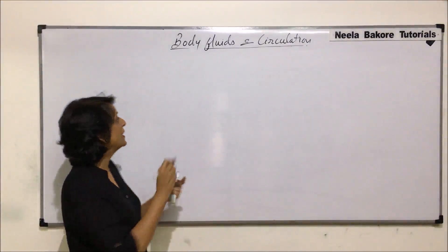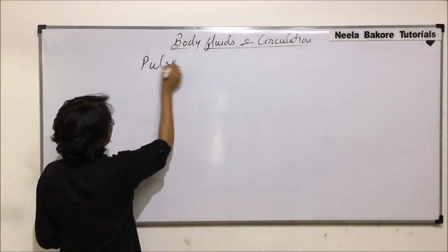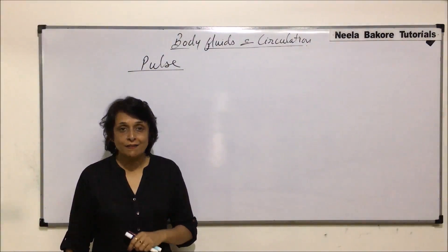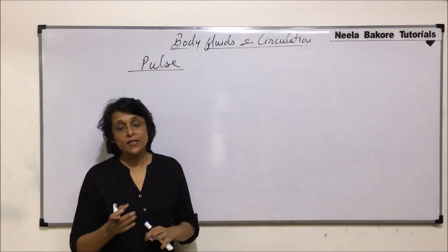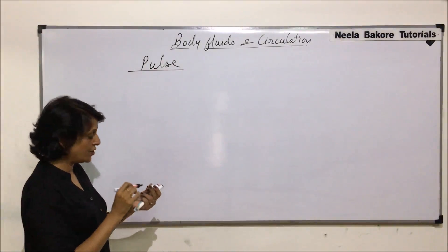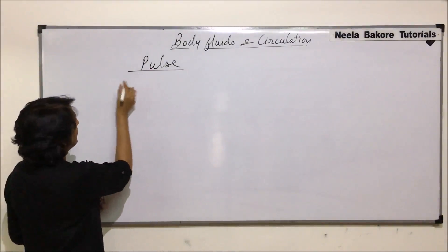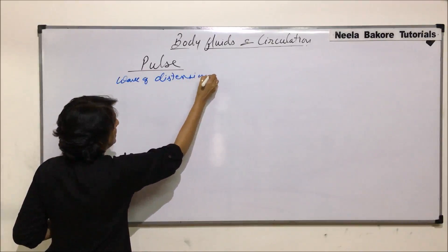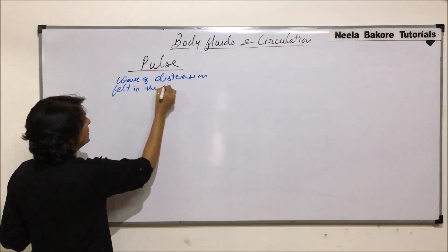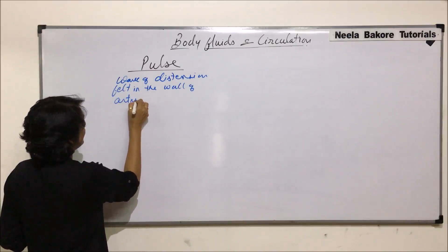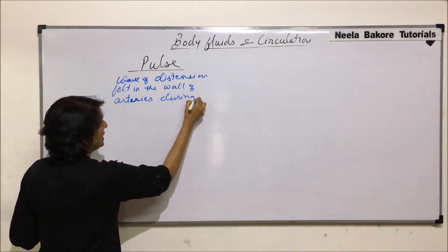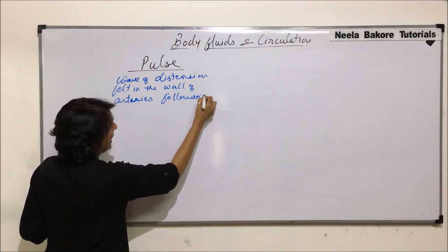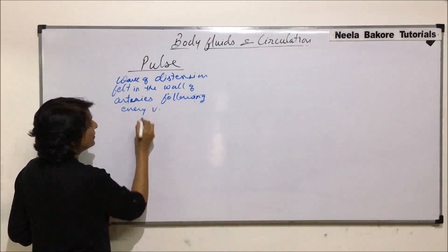Let us now talk about pulse. The definition of pulse is it is a wave of distension which is felt in the wall of arteries during every heartbeat or ventricular systole. So let us first write down the definition: pulse is defined as a wave of distension felt in the wall of arteries following every ventricular systole.